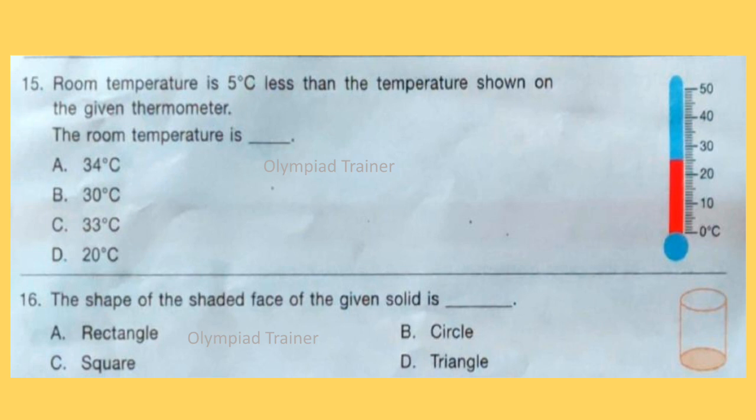Question 15: Room temperature is 5 degree less than the temperature shown on the given thermometer. The room temperature is dash. Now temperature shown on the thermometer is 25 degree Celsius, and 5 degree less than 25 will be 20 degree Celsius. So Option D is the answer.